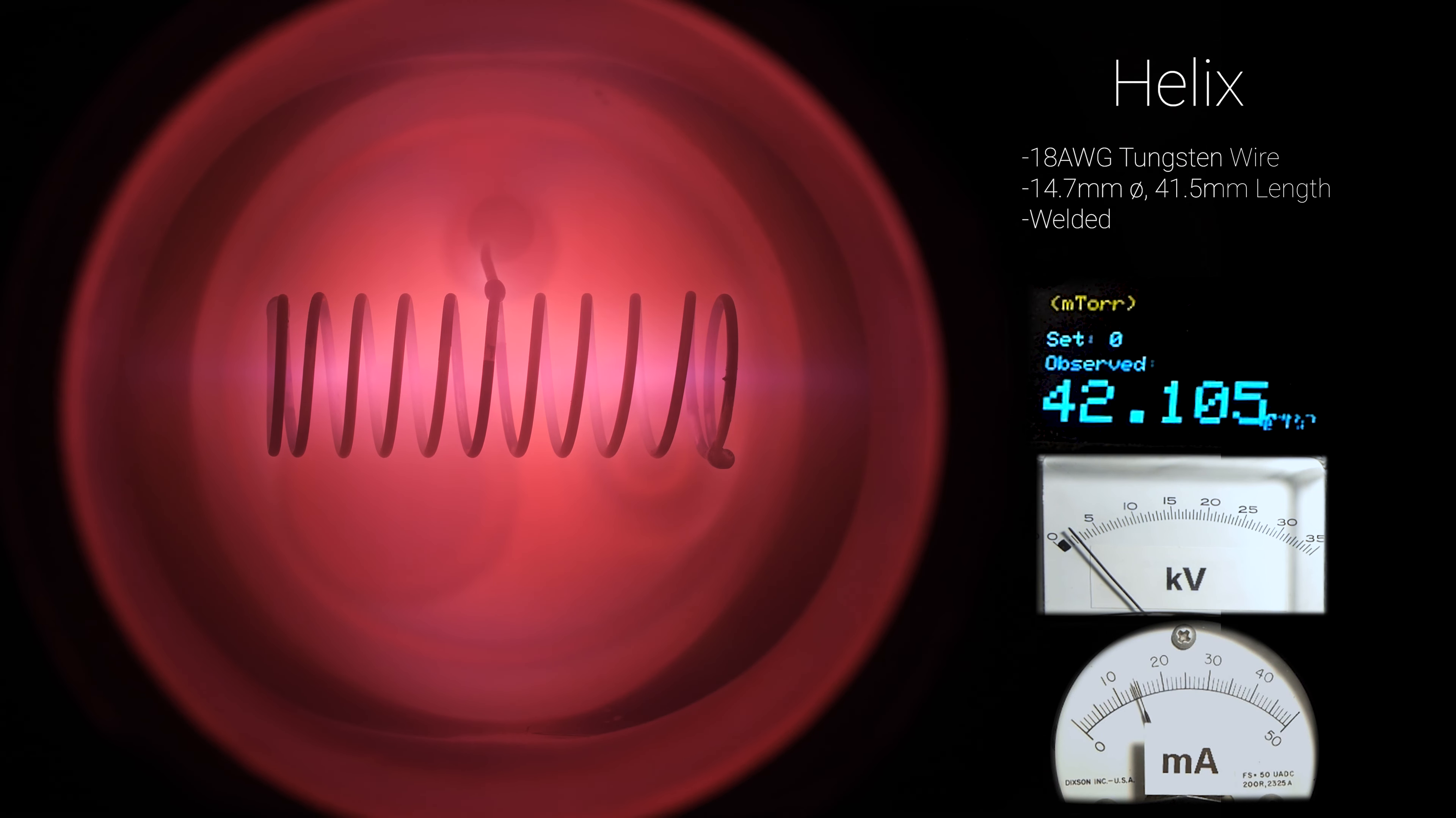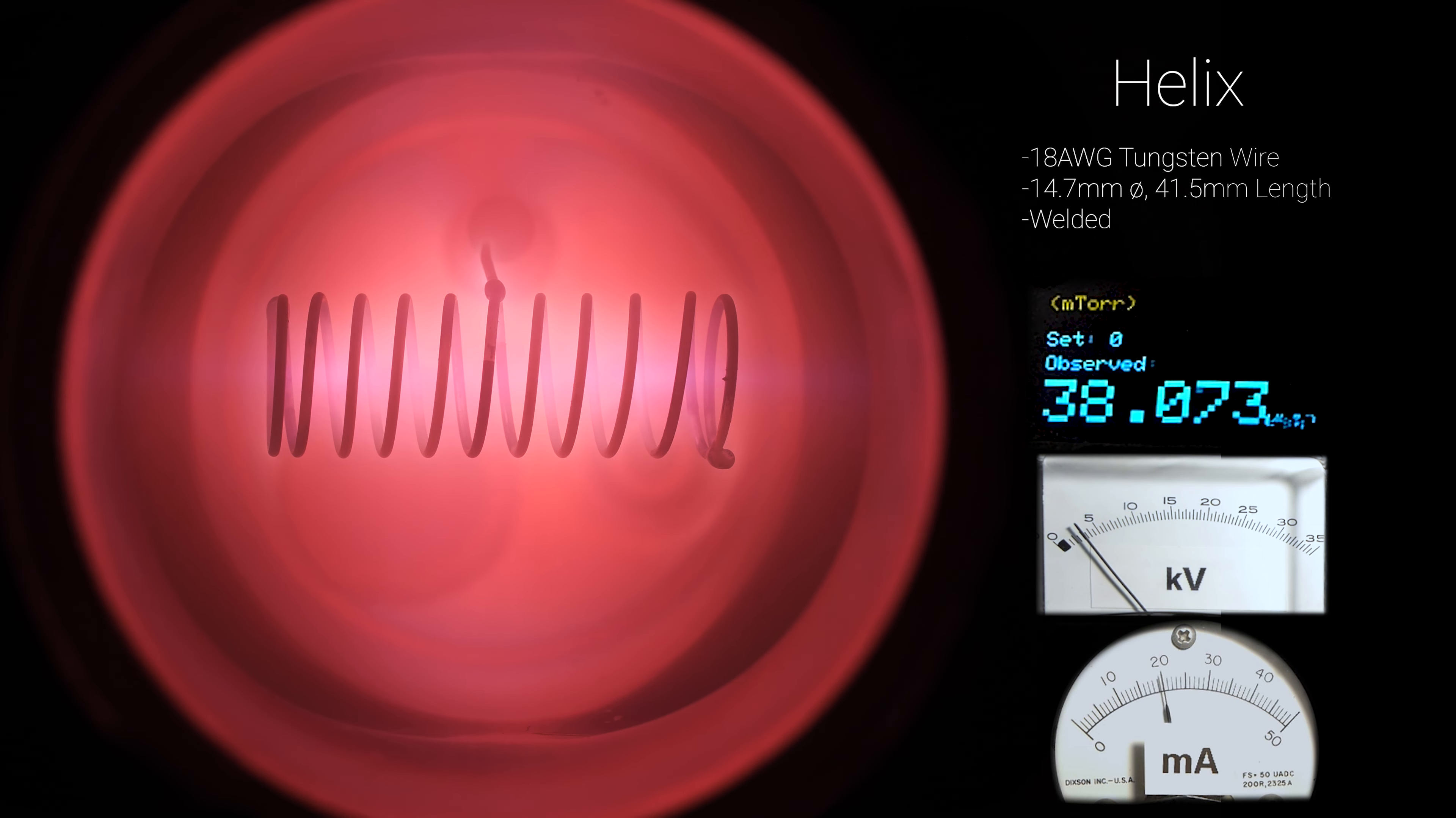Usually with a standard spherical grid setup, the loss of this electron jet signals the end of jet mode and the beginning of star mode, so I think this is the helical grid's expression of star mode.